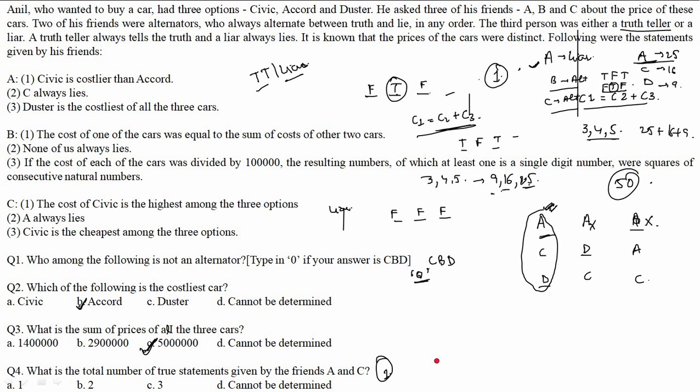Question 4: What is the total number of true statements given by friends A and C? In Case 1, A is a liar (0 true statements) and C alternates F-T-F (1 true statement) — total 1. In Case 2, C is a liar (0 true) and A alternates F-T-F (1 true) — total 1. In both cases, the answer is 1. So the answer is A part — 1. I hope the whole concept behind truth and lie is now clear. Thanks and happy learning!